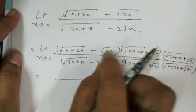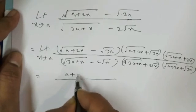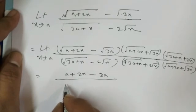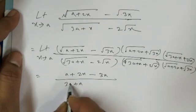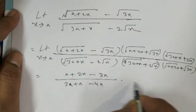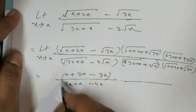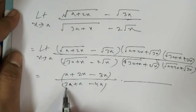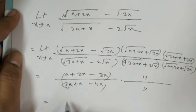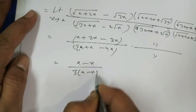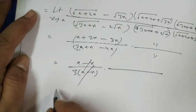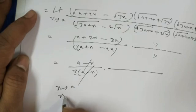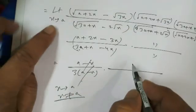After applying a² - b², the numerator becomes (a + 2x - 3x) and the denominator becomes (3a + x - 4x). Simplifying: numerator is (a - x) and denominator is 3(a - x). Since x tends to a and x is not equal to a, the (a - x) factors cancel.